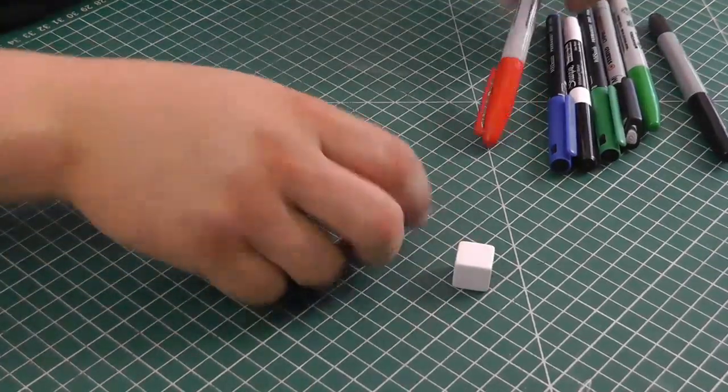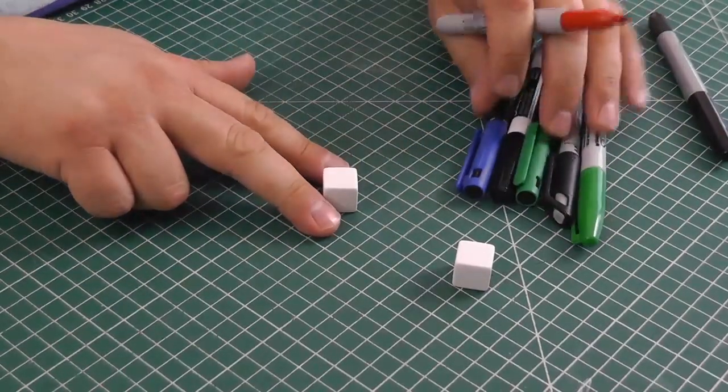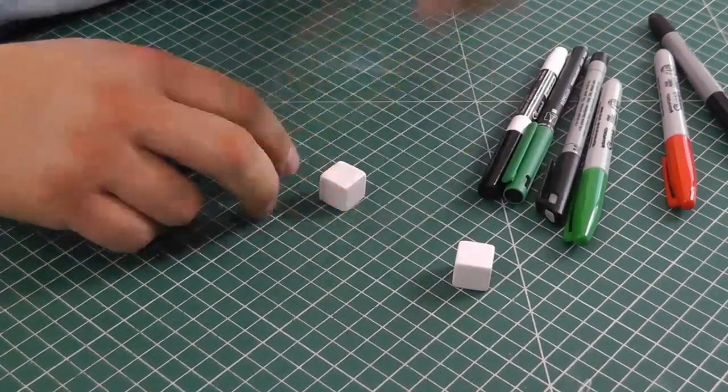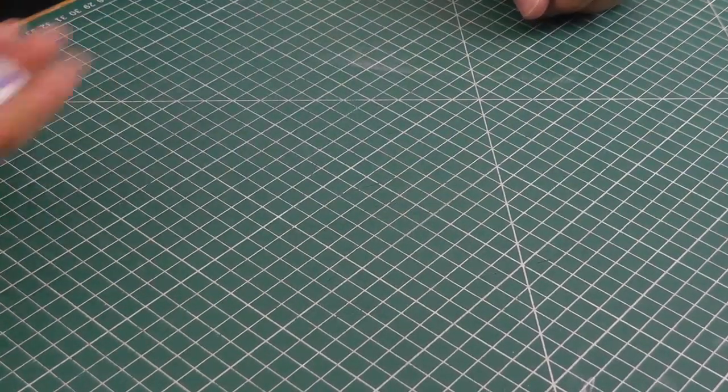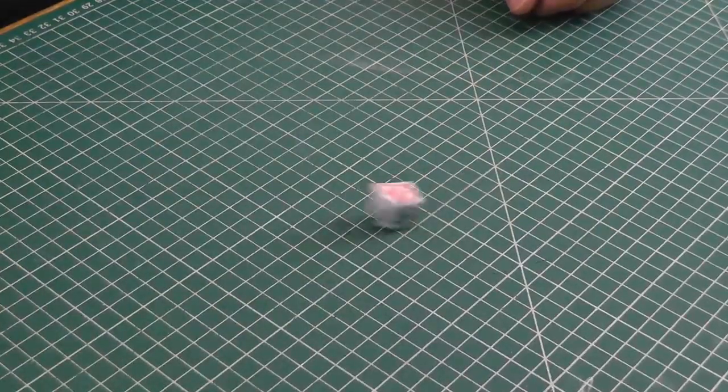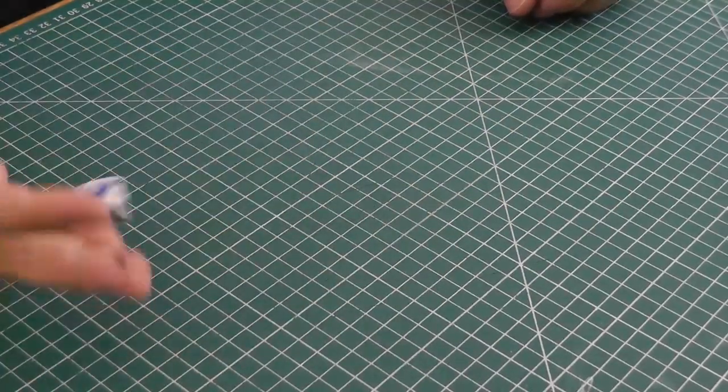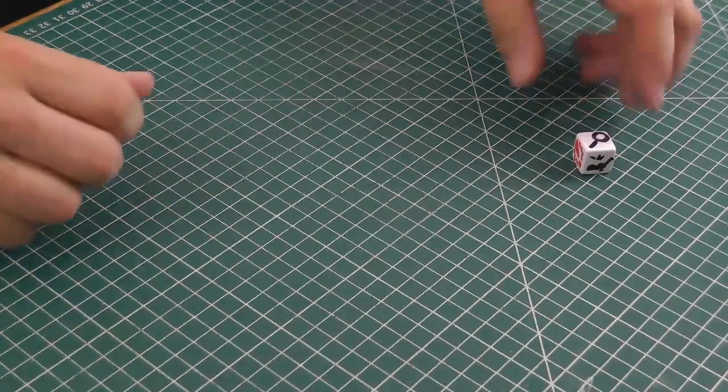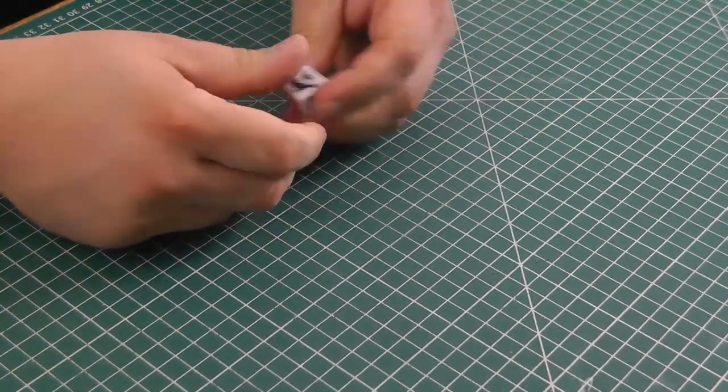If you simply draw on the faces with permanent markers, you can use a variety of different colors. Now you have your die which rolls perfectly well, just like any other. And because it's permanent marker, the faces are pretty durable.